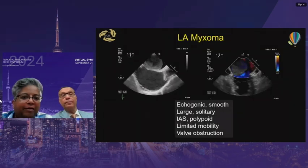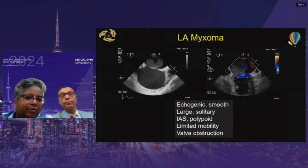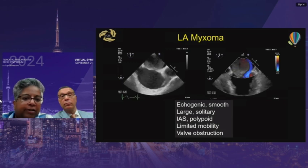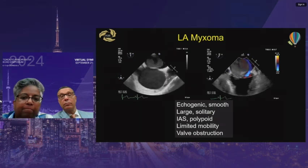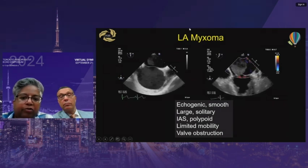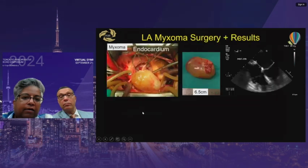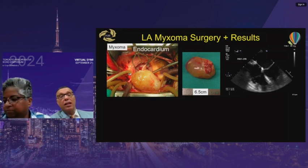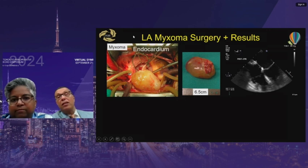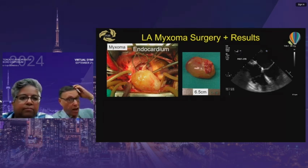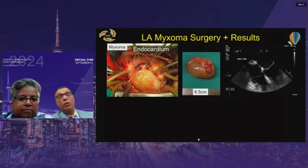These are not subtle tumors — they can be quite large. This case shows a tumor involving the atrial septum and left atrium: it's quite echogenic, smooth, large, solitary, and polypoid, and you can see it prolapsing through the mitral valve causing pseudo-obstruction. This is the smooth type — these don't embolize; they obstruct. The surgical approach was through the right atrium, with a piece of myocardium removed along with the tumor to ensure no tumor cells are left behind.